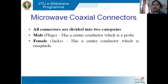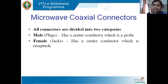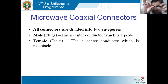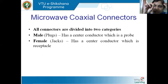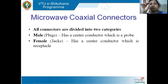The other one is a female connector, or we usually call it a jack. If you can see in this, at the center we have a hole. We don't have any probe coming out. So where we say a probe is coming out, that is a male connector. And where we say there is a hole and no probe coming out, this type of connector is known as a female connector.